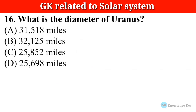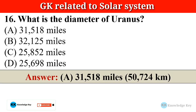Question number sixteen: What is the diameter of Uranus? The correct answer is option A — 31,518 miles, which is equal to 50,724 kilometers.